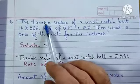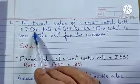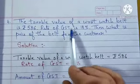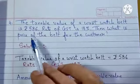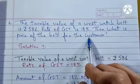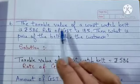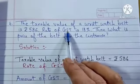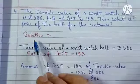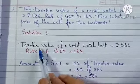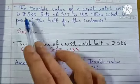Now here they have given you the taxable value of the wristwatch, which is Rs. 586, and the rate of GST is 18%. What will be the price of the belt for customer? Remember, customer has to not only pay the taxable value but also the amount of GST. Let's see the solution. Taxable value of a wristwatch belt is Rs. 586.